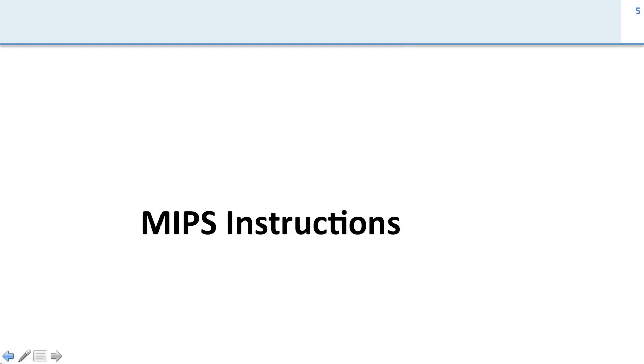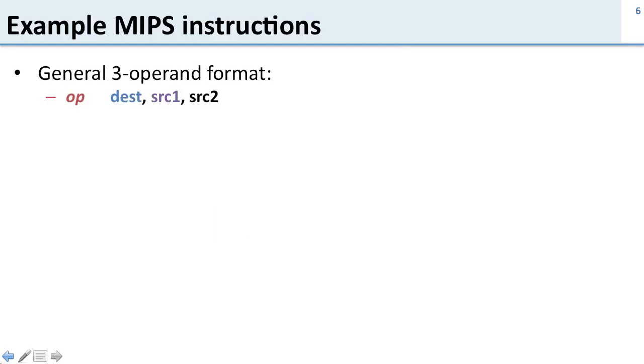Now we're going to talk about the MIPS instructions. We're going to go into details about them, show you some examples and tell you how they work. So MIPS instructions take a general three operand format. That is, they're written like this: operation, destination, source 1, source 2. The way to think about this is as follows. We have some operation, so maybe this is addition or subtraction, and we're going to store the results into a